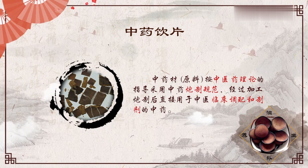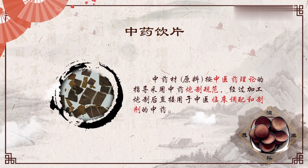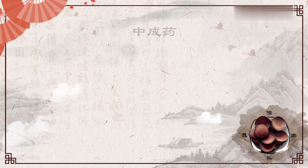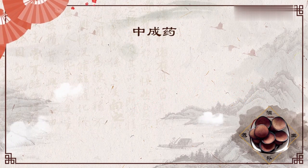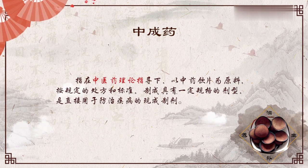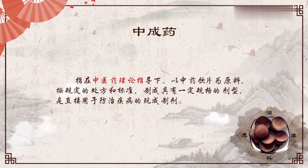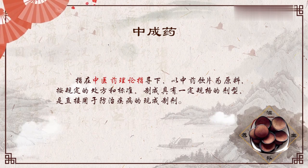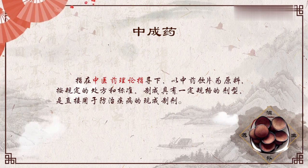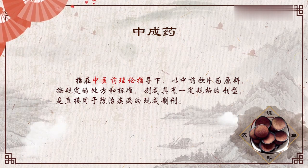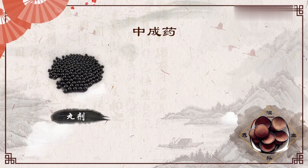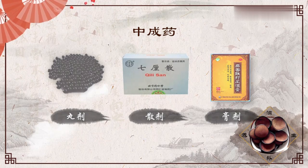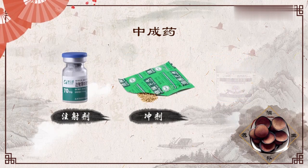关于中药饮片的含义，可以说它是以中药材作为原料，按照中医理论的指导采取中药的炮制规范，经过加工炮制后，直接用于中医临床调配和制剂的中药。而关于中成药的含义呢，它是指的在中药理论指导下，以中药的饮片为原料，按照规定的处方和标准，制成具有一定规格的剂型，是直接用于临床防治疾病的现成制剂。传统的剂型有丸剂、散剂、膏剂，而发展到现在，还有注射剂、冲剂、涂抹剂等等。